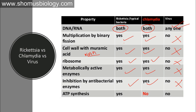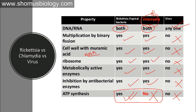ATP synthesis is the property that differs Rickettsia from Chlamydia — the only major difference between the two. Rickettsia can produce ATP, but Chlamydia cannot. Viruses also cannot produce ATP at all. So the key distinction: Rickettsia synthesizes ATP, Chlamydia does not. Chlamydia is associated with the largest cause of STDs in the United States.